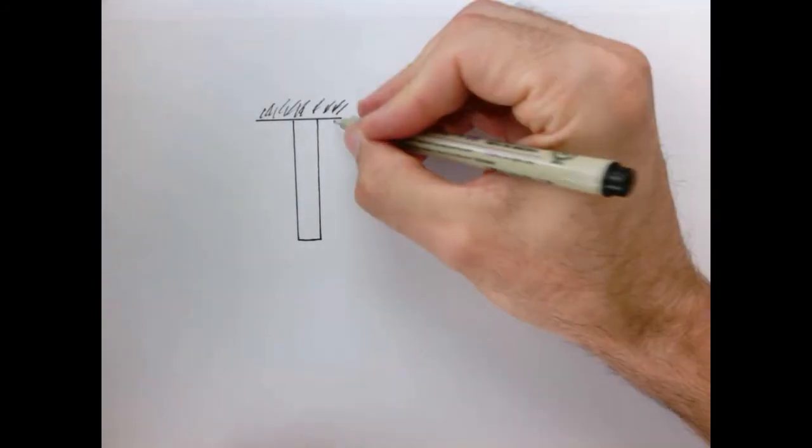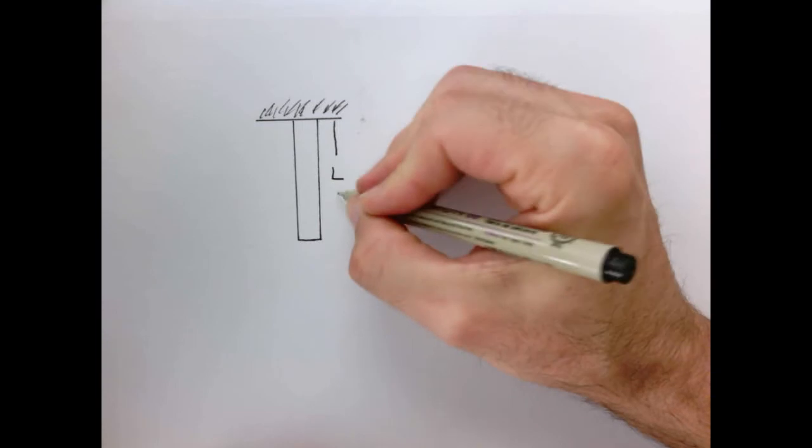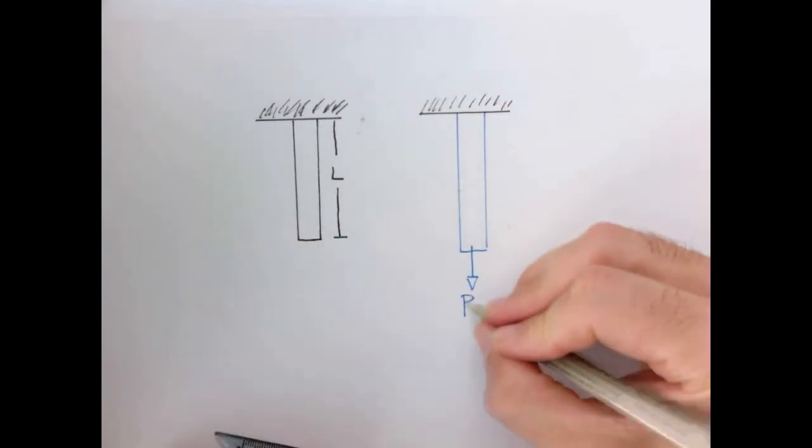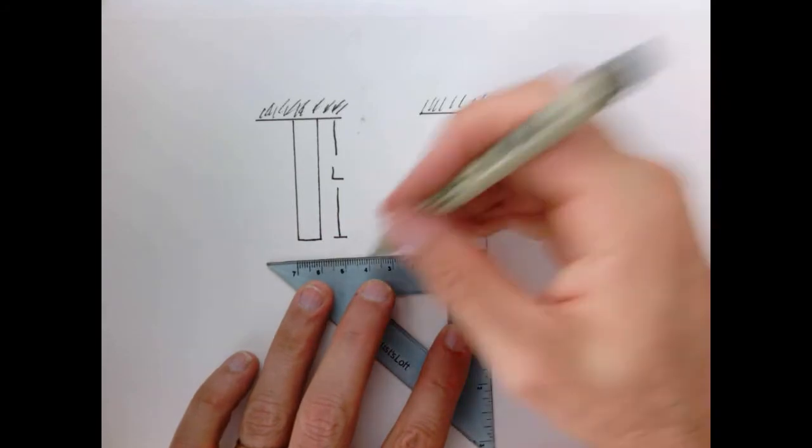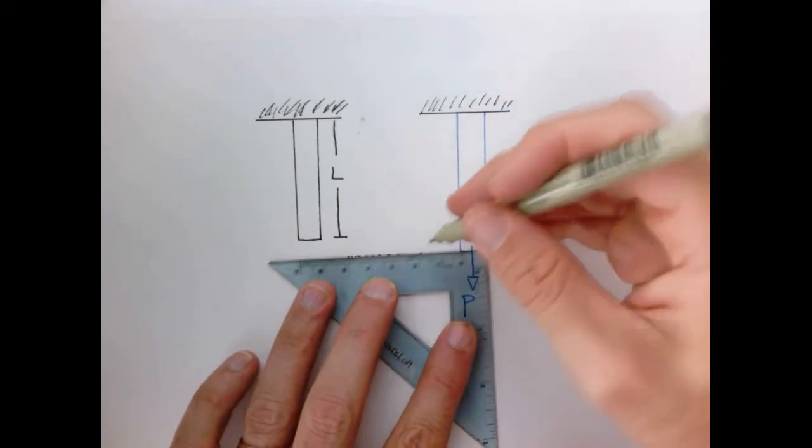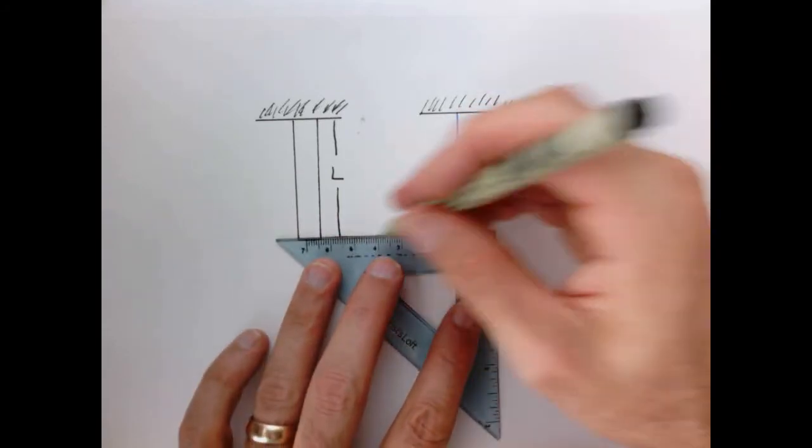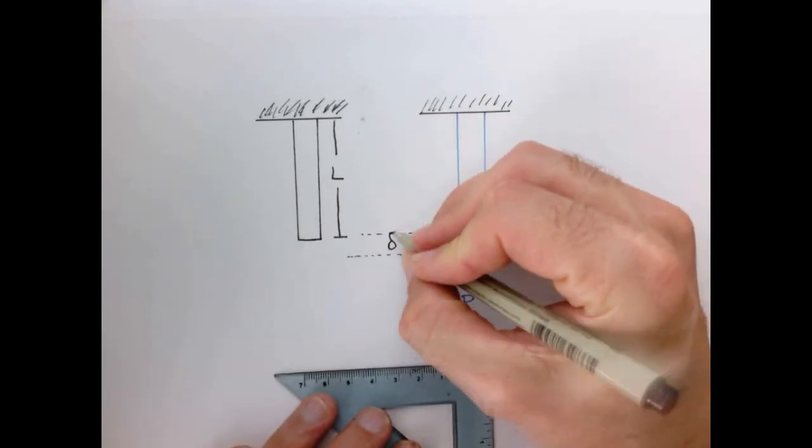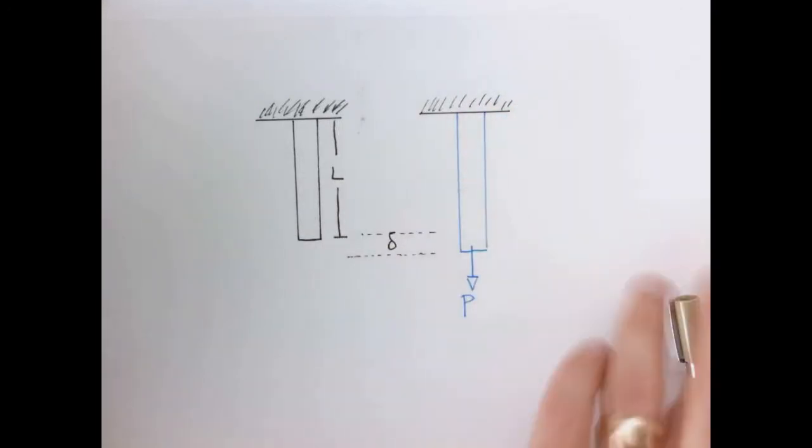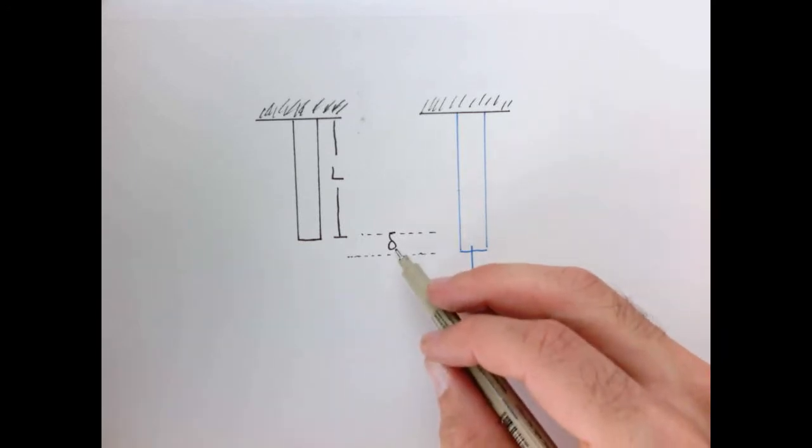So here's our before state, our object has a length L. When I apply a load P downwards, the object stretches, and what we want to characterize is the change in length. So we're going to look at the before and after load, and this difference in the length we'll call delta. What we want to understand is the relationship between P, the load, and delta.